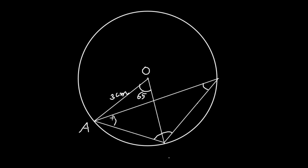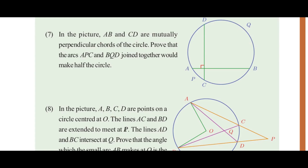This is an obtuse triangle. In the picture, AB and CD are mutually perpendicular chords of the circle. Prove that the arcs APC and BQD joined together would make half the circle.